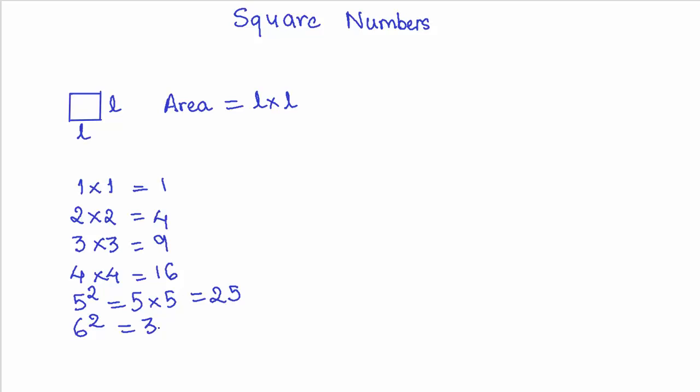7 squared gives you 49, then 8 squared gives you 64, 9 squared gives us 81, and 10 squared, which is 10 times 10, gives us 100.